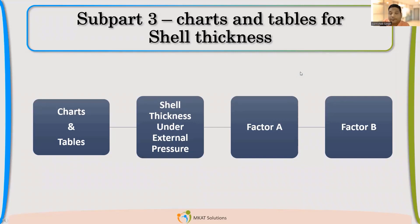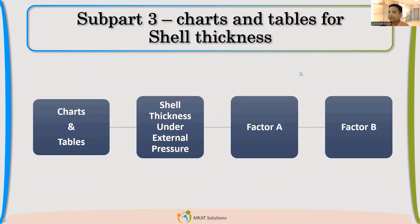With Factor A, we go to the material chart. For some materials, CS1 will be the material chart. For SA516, it is CS2. So after we have Factor A, we go to CS2 if the material of construction is SA516, and then we will be able to find Factor B. Factor B will help us derive the maximum allowable pressure. That is the simple philosophy. When we calculate the thickness, we will see that in detail. Subpart 3 is about external pressure calculation for shell.